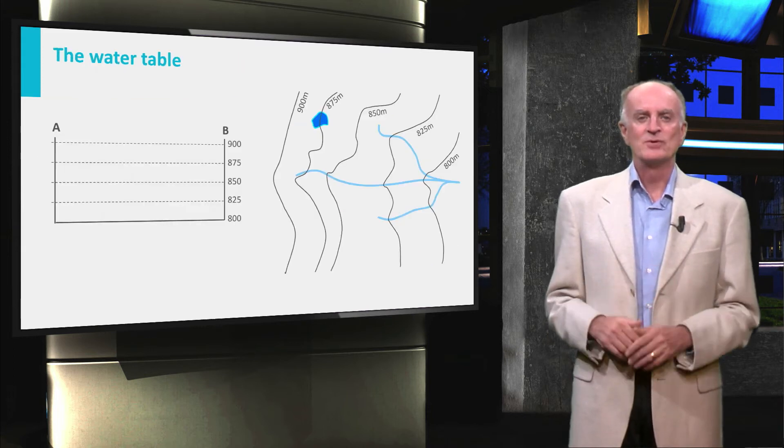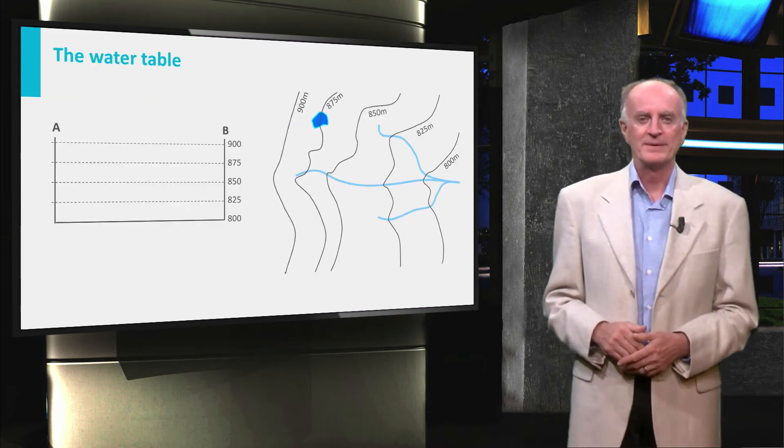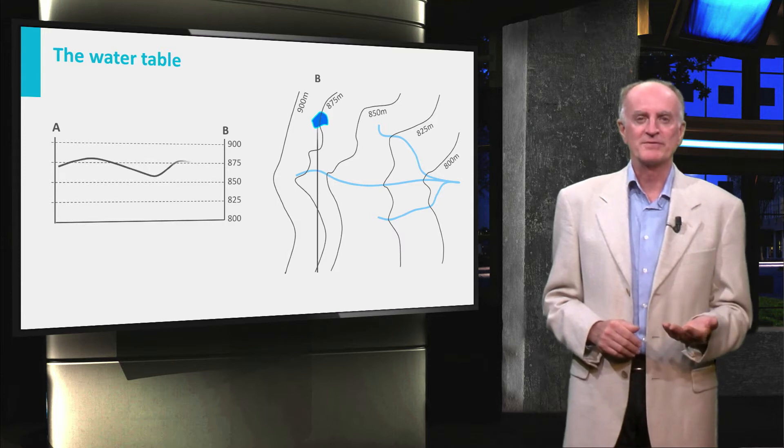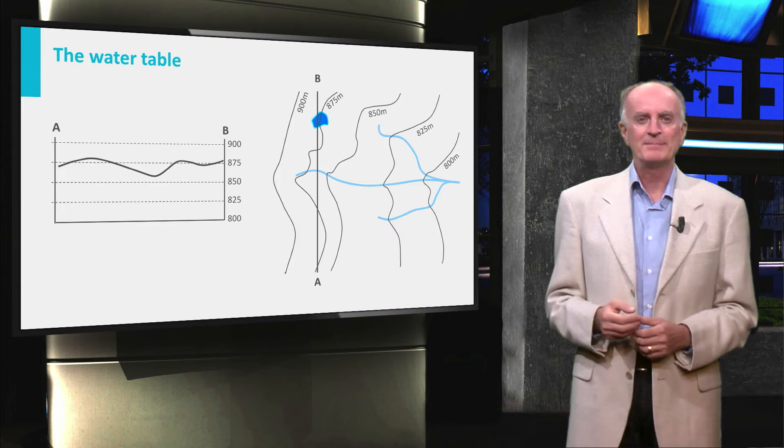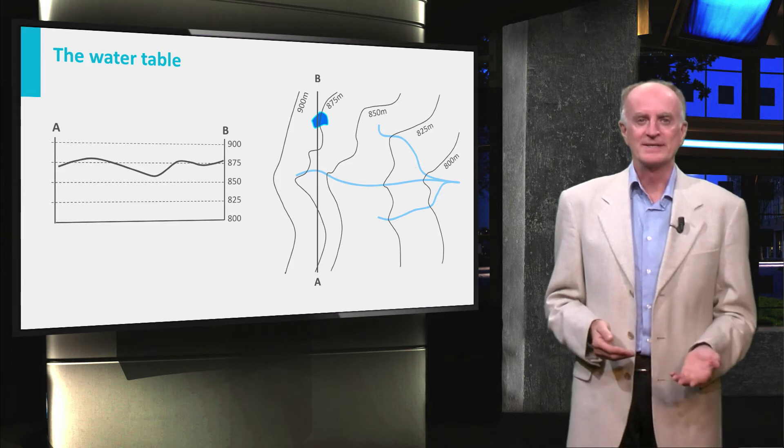Let us look at a somewhat more realistic water table map. Here, you see the topography of the area. Along the section AB, to the right of the map, you see the topographic profile we will look at.